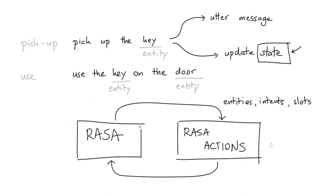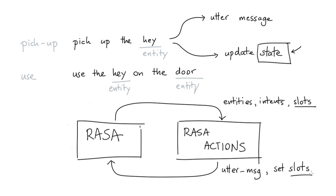The Rasa actions receive information from the tracker. What I can do inside of these actions is utter messages to send back, but I can also specify slot values. And as far as an inventory system goes, I think slots are going to be the way that we want to implement this.